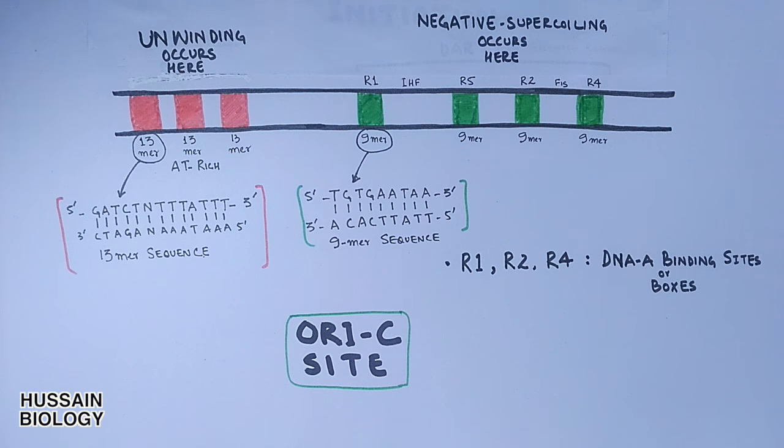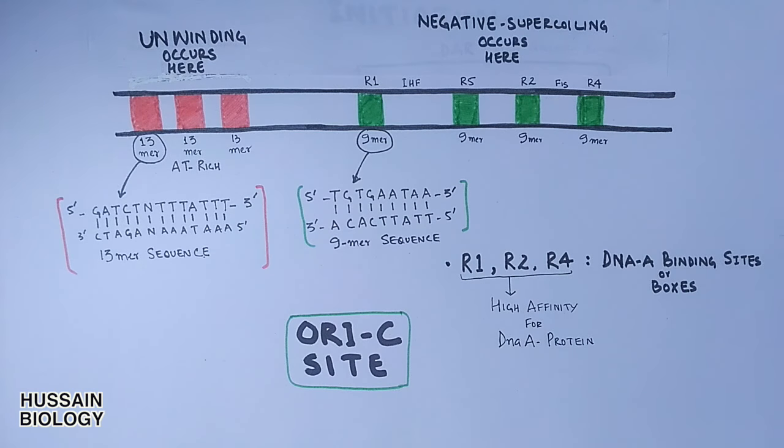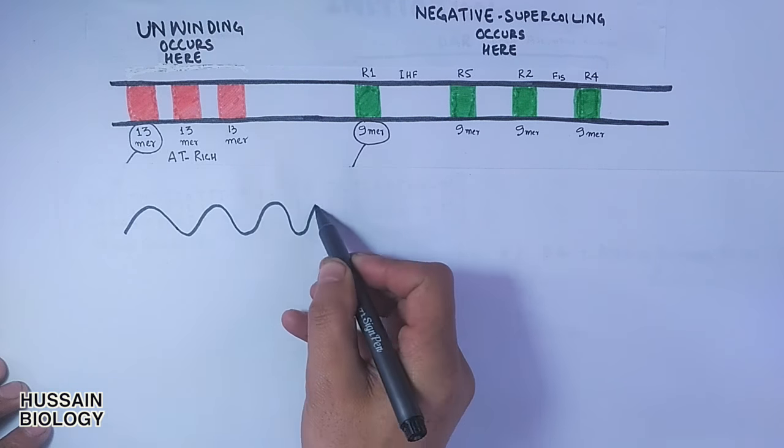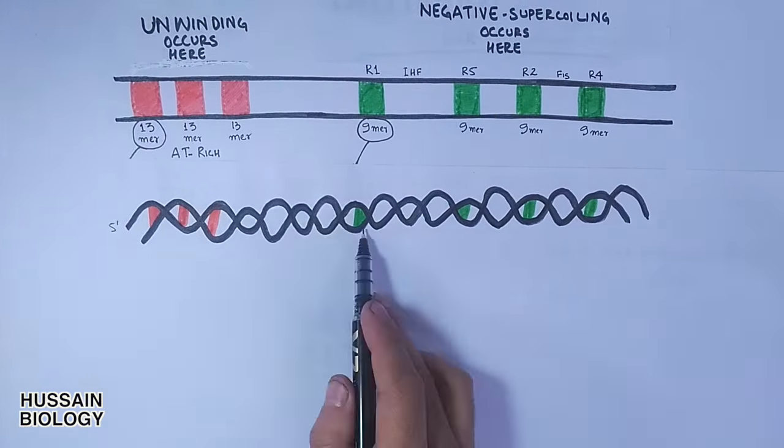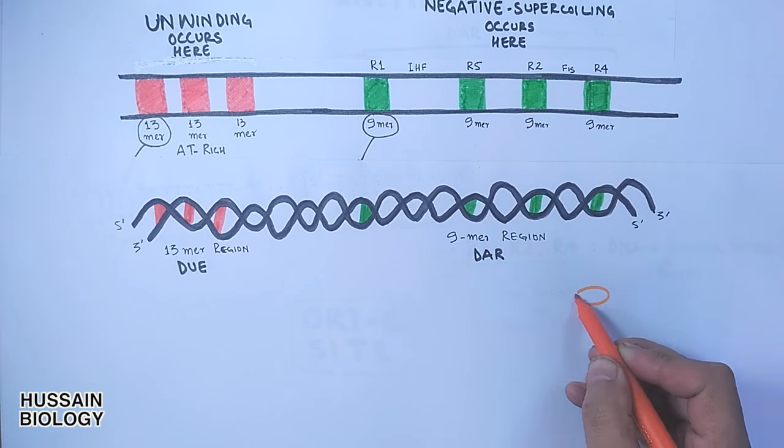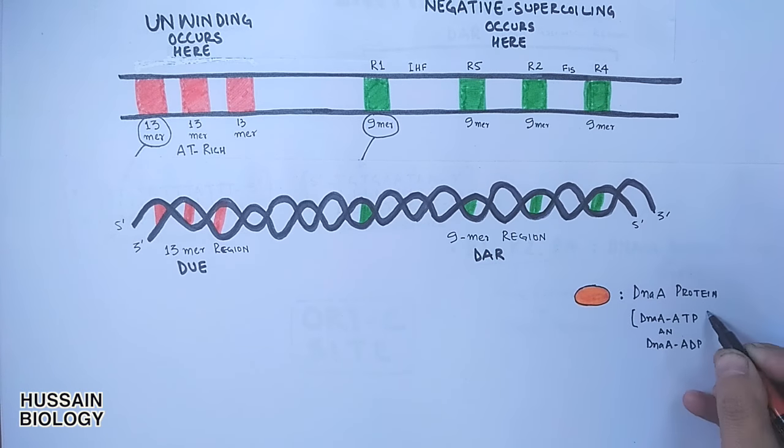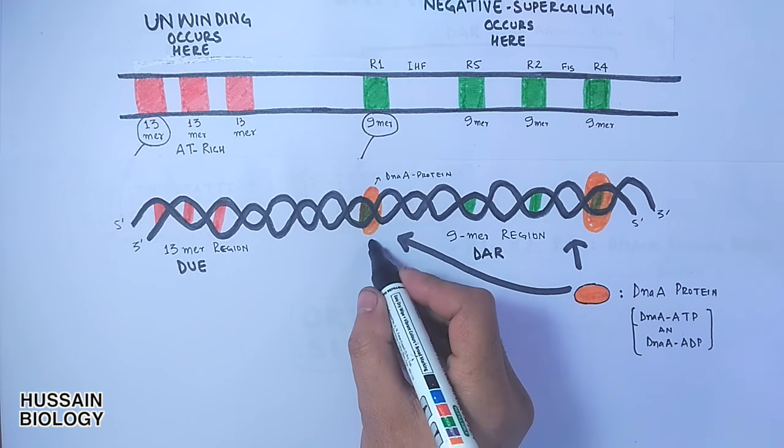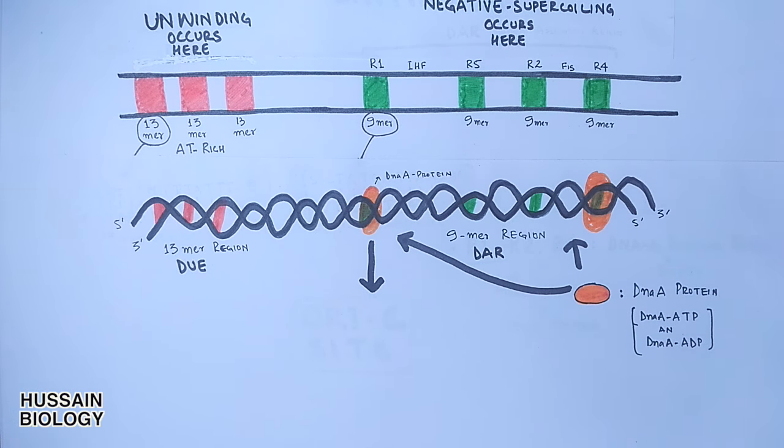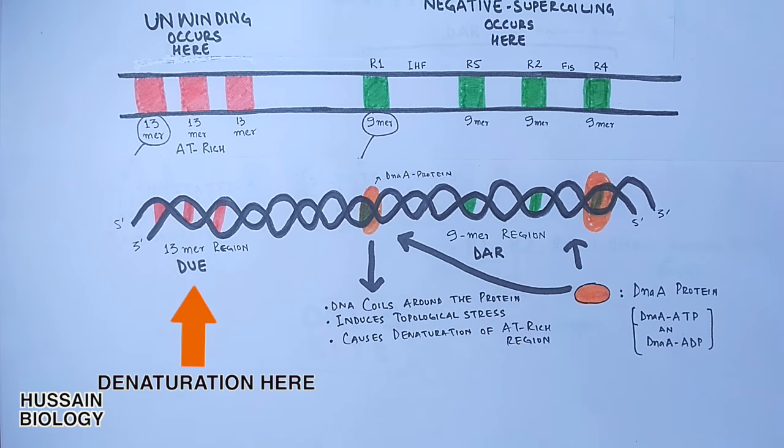Although R5 and other sites also bind DNA proteins, these three boxes have high affinity for binding. The diagram shows DNA in its spiral form with 13mer sequences in red and 9mer sequences in green. DNA A protein, shown in the figure, has either ADP or ATP bound and gets attached to the 9mer sequences called the R boxes. With the attachment of DNA A proteins to the DAR region, the DNA coils around this protein, inducing topological stress which ultimately causes denaturation of the AT region at 13mer sites. Energy is supplied by the ATP molecules of DNA A protein.